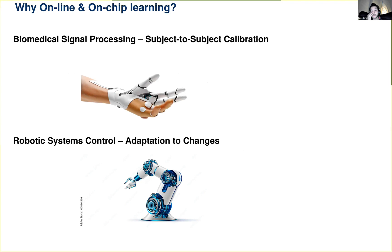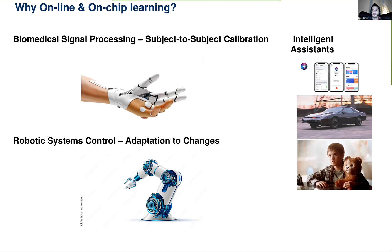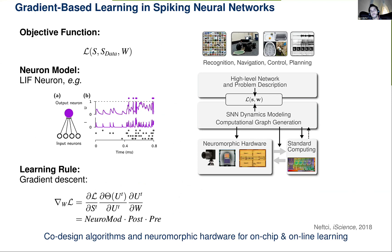One question we haven't really answered is why we should do this. Beyond energy benefits, there are new applications enabled by online on-the-spot learning — biomedical signal processing with procedures that adapt to the user on the fly, robotic systems that adapt when parts change, and more interactive intelligent assistants. To summarize how we can use the theories that Friedemann and I develop: you start with an objective function characterizing performance on a task, use models of neurons like those on your chip, and design learning rules that can do gradient descent on those neural models.